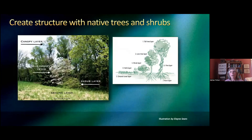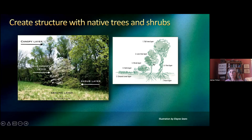Going back a bit — what we were looking at were some good examples of creating structure with native trees and shrubs. In nature, like that natural landscape I showed you in the beginning, there are layers. You have the canopy layer, which is trees; you've got the sub-canopy layer, which can be the low tree layer and the shrub layer; you've got vines going up.